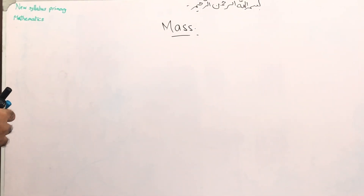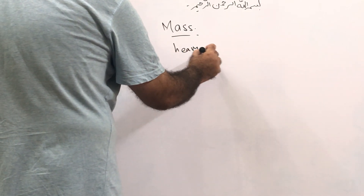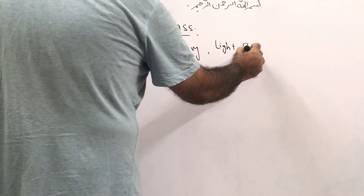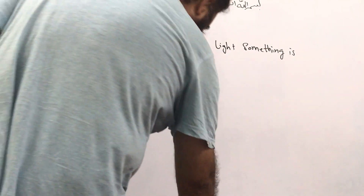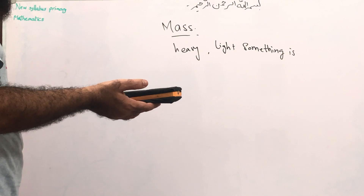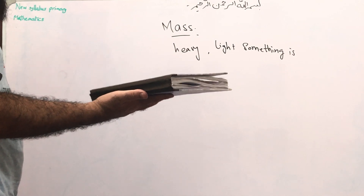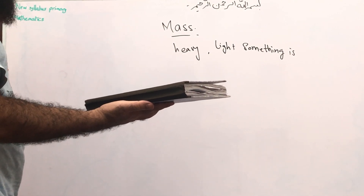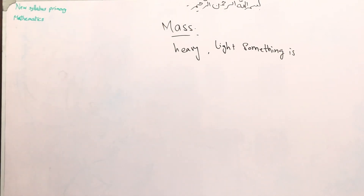What is mass? Mass tells us how heavy or light something is. For example, if I hold this duster, it feels very light because it has less mass. If I hold this register or notebook, it has comparatively more mass because it is heavier than the duster. So heaviness or lightness of things is measured in terms of mass.